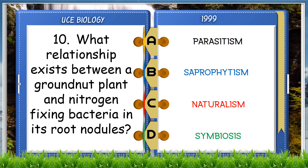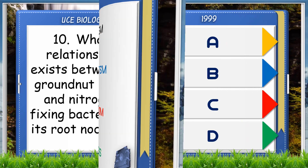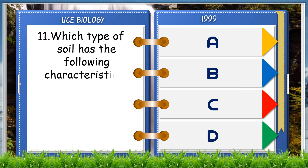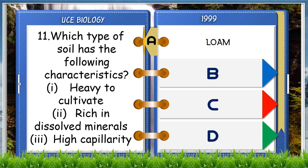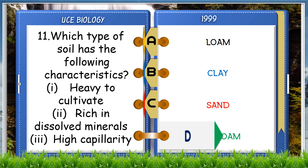Which type of soil has the following characteristics: 1. Heavy to cultivate, 2. Rich in dissolved minerals, 3. High capillarity? A. Loam, B. Clay, C. Sand, D. Silty loam. The answer is B, clay.